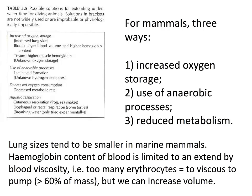There are three ways to increase oxygen capacity: increase oxygen storage by increasing respiratory pigments and cardiovascular fitness; use anaerobic processes; and reduce metabolism into a torpid state. Note that lungs in marine mammals are smaller than in terrestrial counterparts (related to buoyancy), and haemoglobin content is limited by blood viscosity — too many red blood cells makes blood too viscous to pump. Organisms use a mixture of these strategies.